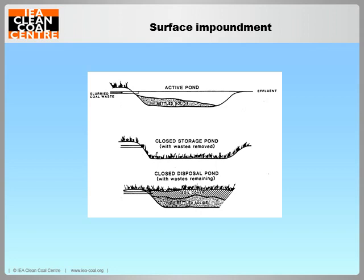In recent years, regulations concerning wet ponds have become more restrictive. This includes installing liners to prevent leakage and systems to monitor groundwater quality. The structural safety of dams and dikes has become increasingly important too. These types of restrictions will tend to increase wet ponding costs, making it less attractive as a disposal option.